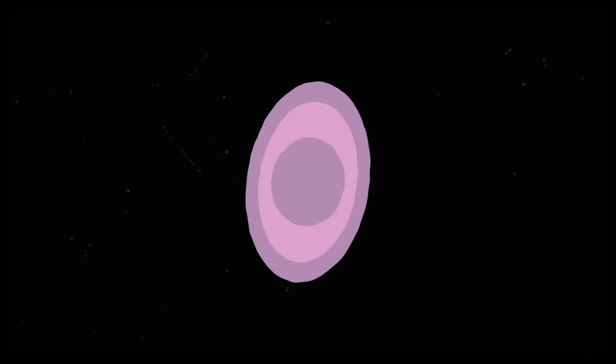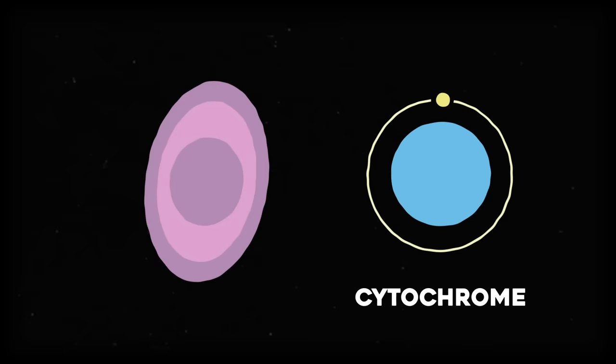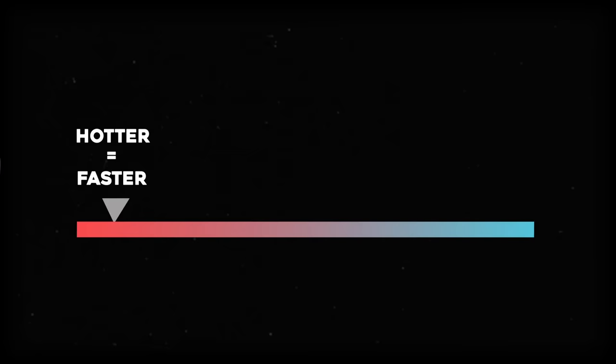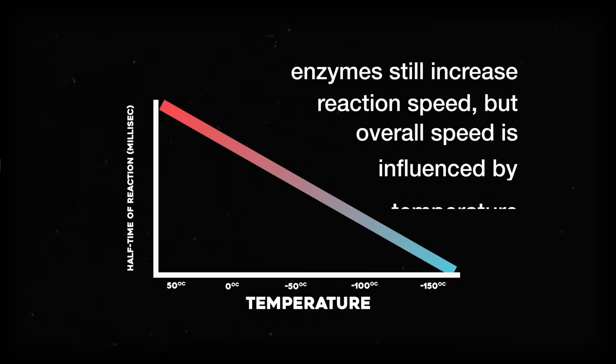They observed a photosynthetic bacteria that uses light to oxidize a protein called cytochrome. When it's exposed to light, the cytochrome donates an electron to the molecules around it. This reaction was shown to be temperature-dependent. Hotter conditions increased reaction speeds, colder temperatures slowed them down. Adding an enzyme into the mix still increased reaction speed, but ultimately the whole thing could be influenced by temperature.